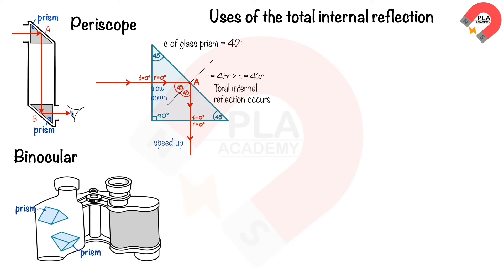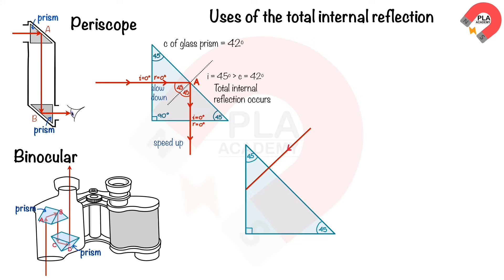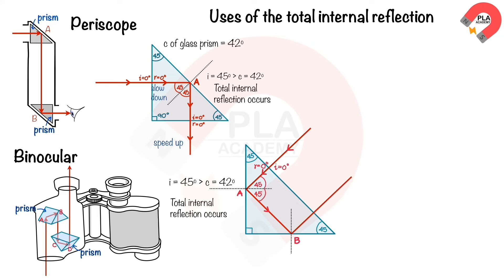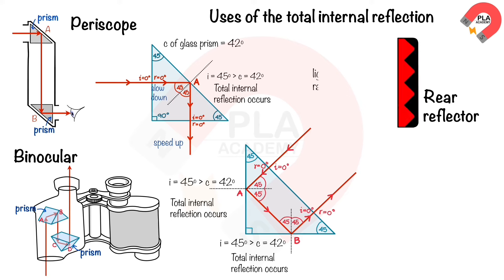Binoculars consist of prisms. As the light ray travels through a binocular, total internal reflection occurs at points A, B, C, and D. The prisms are glass right-angle prisms at 45°. Light enters from air to glass at 0° incidence, slows down but does not change direction. It reflects at point A at 45° — greater than the critical angle — causing total internal reflection, then again at point B with the same effect.